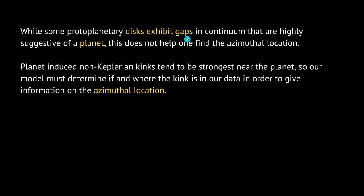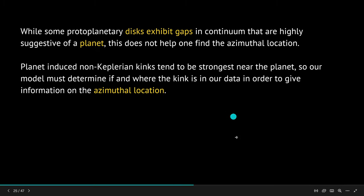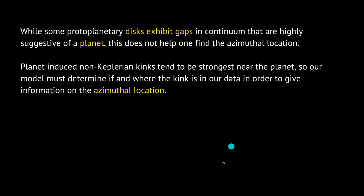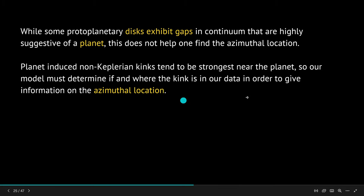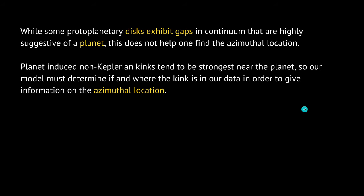You might say you can see the gap in the disk, so of course there's a planet — yes, that's expected. But the point is to find the exact location of the planet. If you have a circular gap, where is it — north, south, east? What is the asymmetrical location? Where is it exactly in this cloud of gas and dust so we can study its specific effects compared with other planets in the cloud?